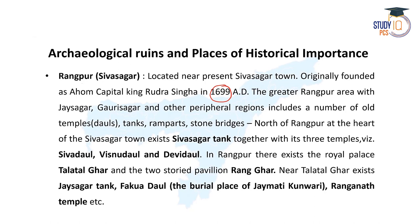The Rangpur area includes a large number of old temples or doles, Pukhuri or tanks, ramparts or gaurs, and stone bridges. To the north of the Rangpur area, at the heart of Sibsagar town, the Sibsagar tank is located. On its bank, Sivadol, Vishnudol, and Devidol are located, all built following the order of Rani Ambika of Sibsagar. In Rangpur, the Royal Palace Talatal Ghar is also located, along with the two-storeyed pavilion Ranghar. Near Talatal Ghar, the Joysagar tank, Fakuadol, and Rangonath temple are also located.